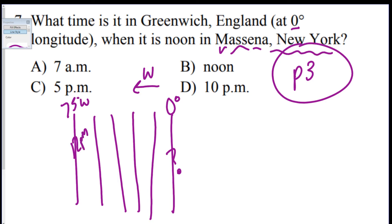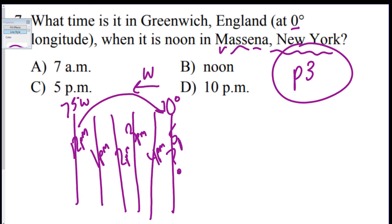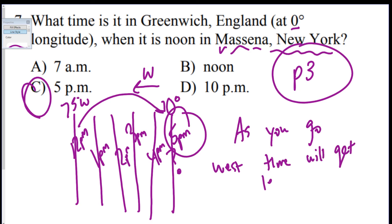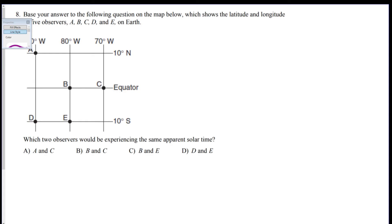Messina is about 75 degrees west of the Prime Meridian. Each line of longitude is 15 degrees, so: 0, 15, 30, 45, 60, 75 — that's five lines. It's noon at Messina, and as you go east time increases by one hour per line: 1 PM, 2 PM, 3 PM, 4 PM, 5 PM — so it is 5 PM at the Prime Meridian.